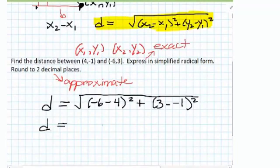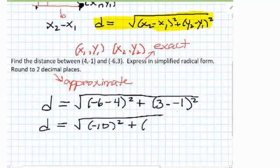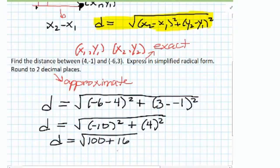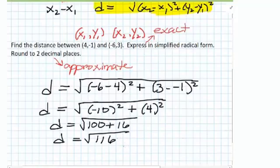We have distance equals negative 6 minus 4 is negative 10, so we have negative 10 squared plus 3 minus negative 1 is 3 plus 1 or 4 squared. So the distance is going to be equal to the square root of 100 plus 16. So the distance is the square root of 116. But it's just not in a format that we necessarily like. We need to get it in simplified radical form. If this number is not a perfect square, we want to see if any of its factors are a perfect square.